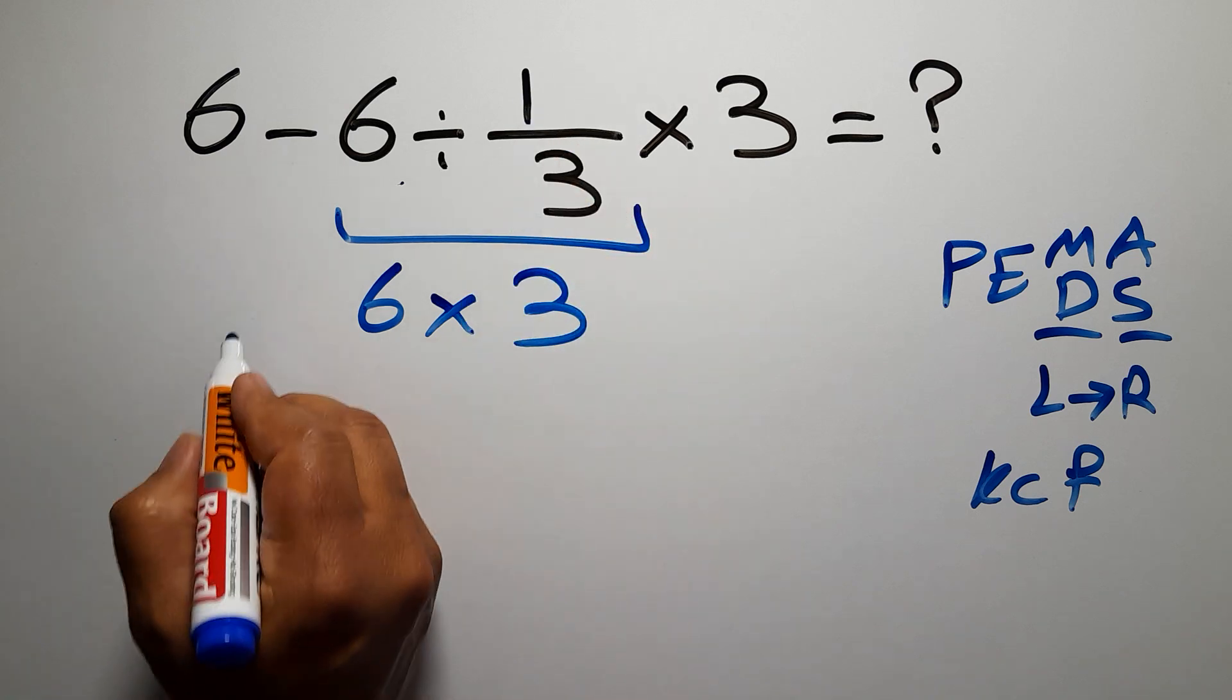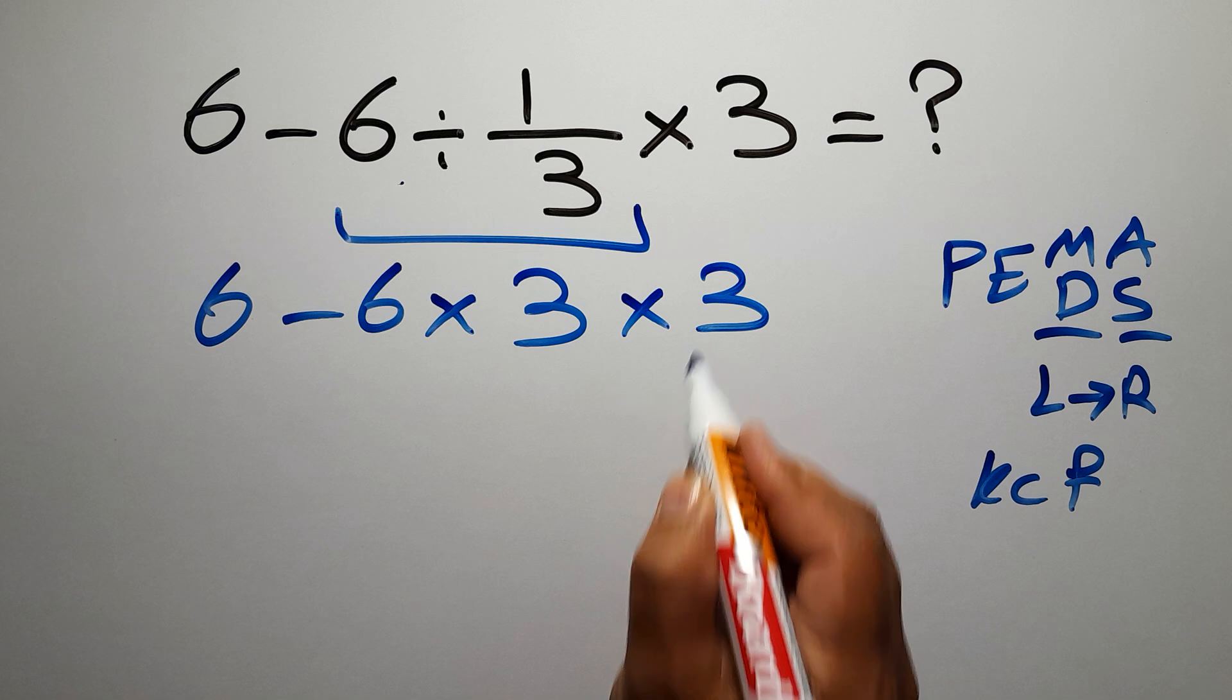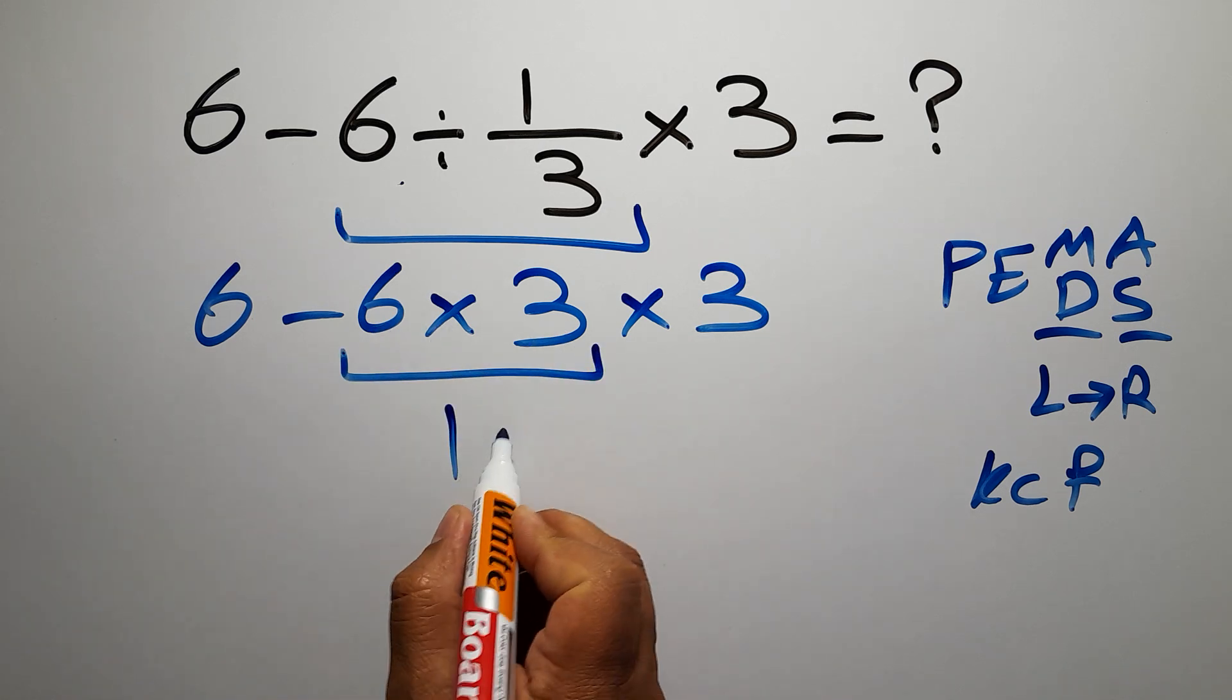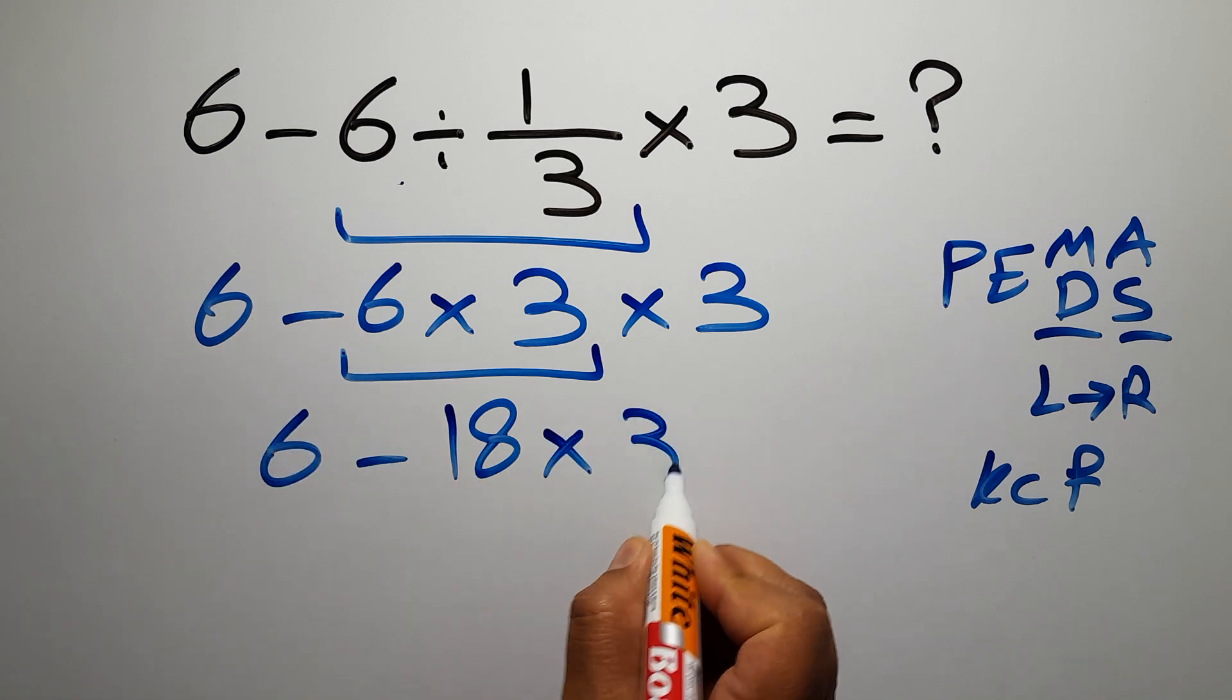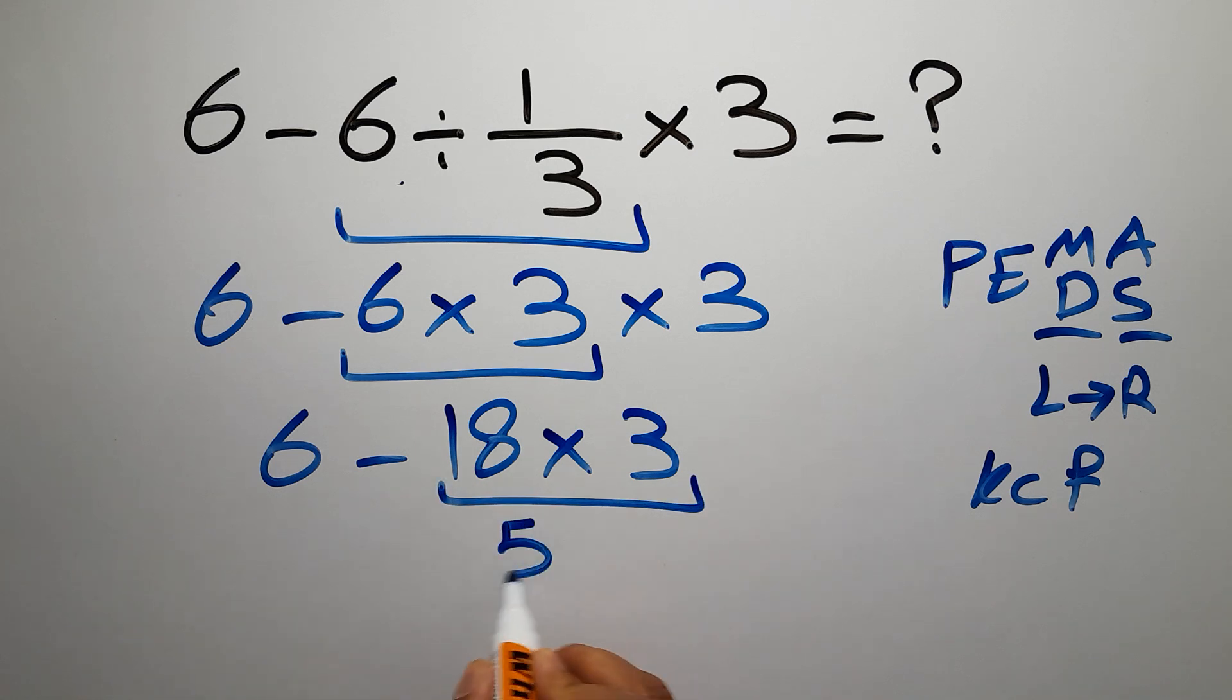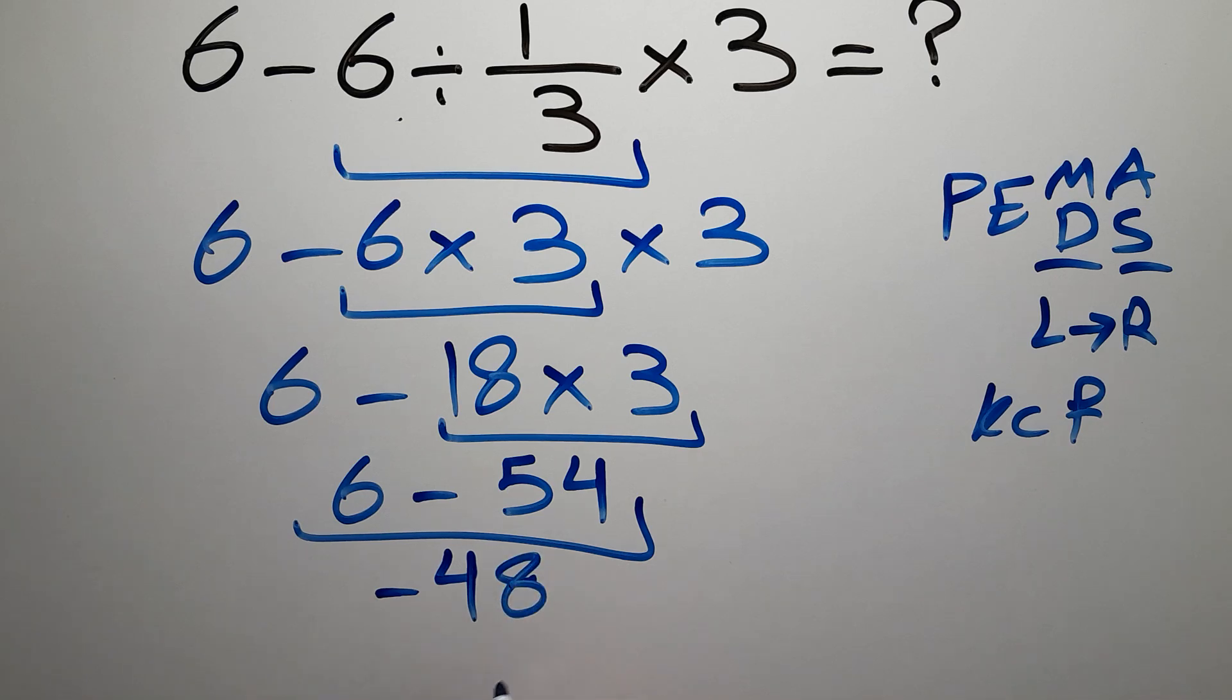So we have 6 minus 6 times 3 times 3. Now, 6 times 3 gives us 18, so 6 minus 18 times 3. Now, 18 times 3 gives us 54, so 6 minus 54 which equals negative 48. Negative 48, this is our final answer to this problem.